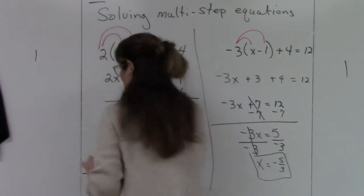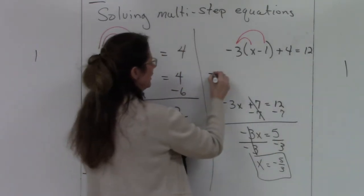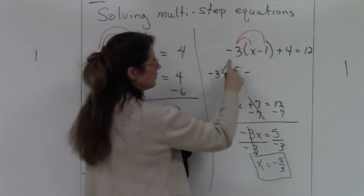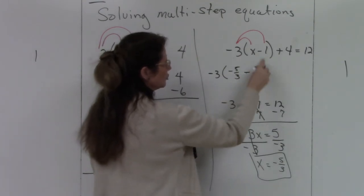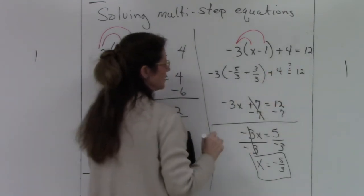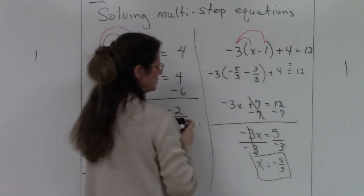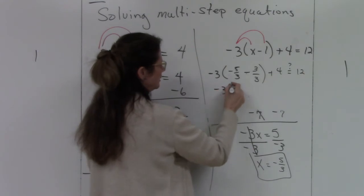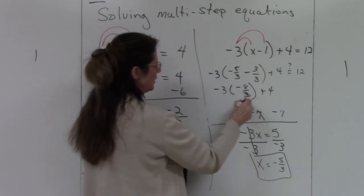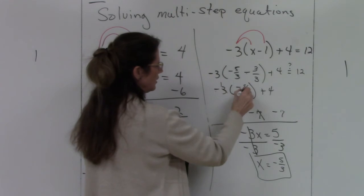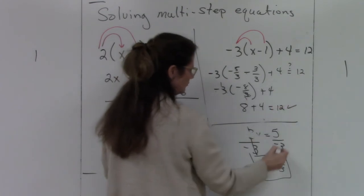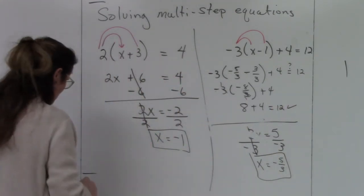That is a perfectly valid answer — there's nothing wrong with a fraction. Let's double-check by plugging negative 5 thirds back in. I need a common denominator: 1 becomes 3 thirds. So negative 5 thirds minus 3 thirds is negative 8 thirds, plus 4. Multiplying, the 3s cross-cancel: negative 1 times negative 8 is positive 8, plus 4 does give me 12. Correct!